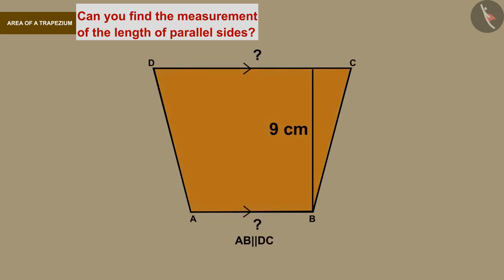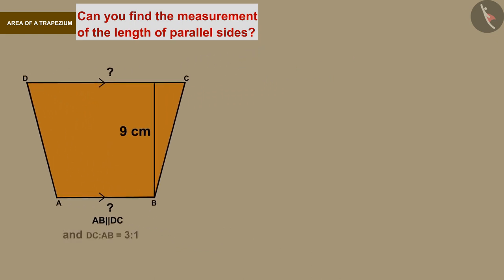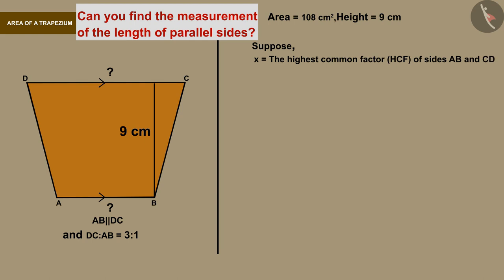We have to find the parallel sides of trapezium. The parallel sides are in the ratio of 3 is to 1. Suppose x is the highest common factor of the values of sides AB and CD.